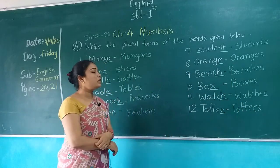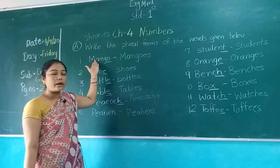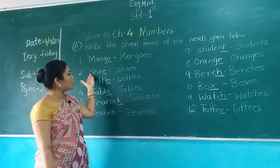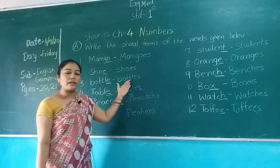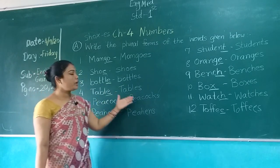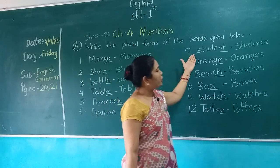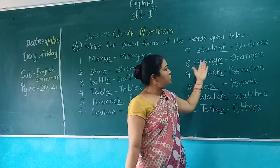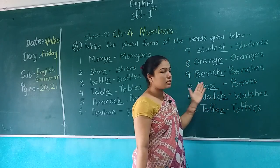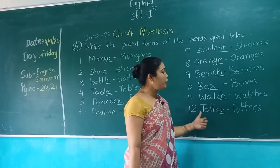Let's revise. Mango — plural form: Mangoes. Shoe — Shoes. Bottle — Bottles. Table — Tables. Peacock — Peacocks. Student — Students. Orange — Oranges. Bench — Benches. Box — Boxes. Watch — Watches. Toffee — Toffees.